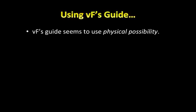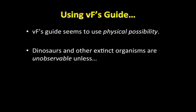If we use van Fraassen's guide, what we notice is that van Fraassen seems to be focusing on the concept of physical possibility. When we say if x were present to us it would be observable, the notion of possibility that seems to be at stake here is that it would be physically possible to observe it — that there are circumstances that make it physically possible for us to observe the thing in question.